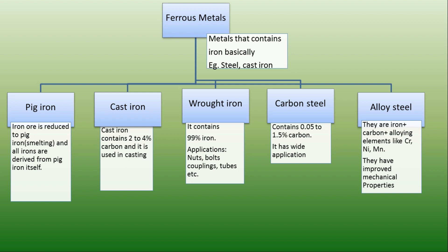Next, wrought iron. It is 99% pure iron. It is tough and used for making nuts and bolts, tubes, sheets, etc.